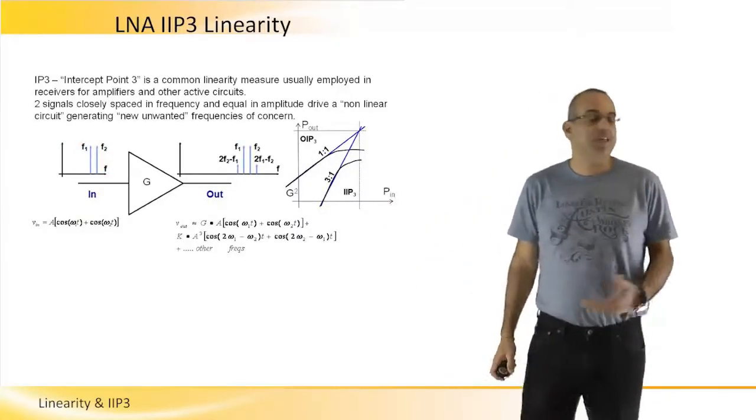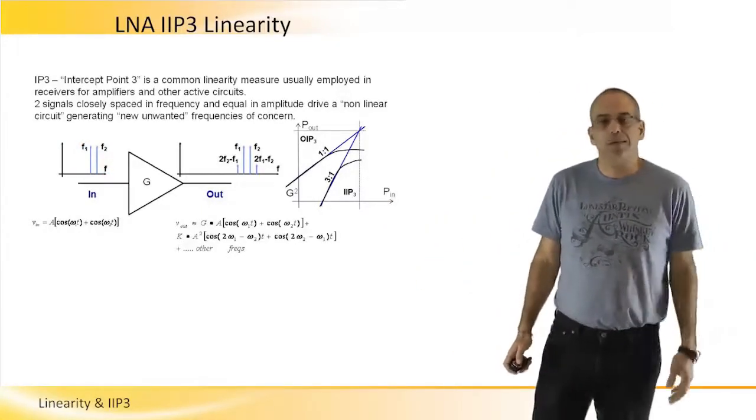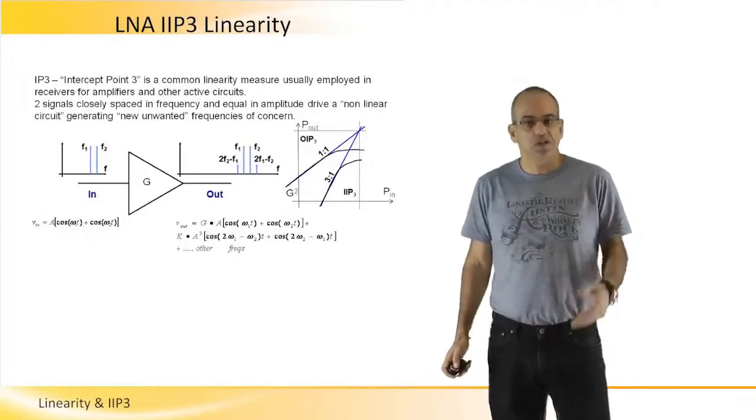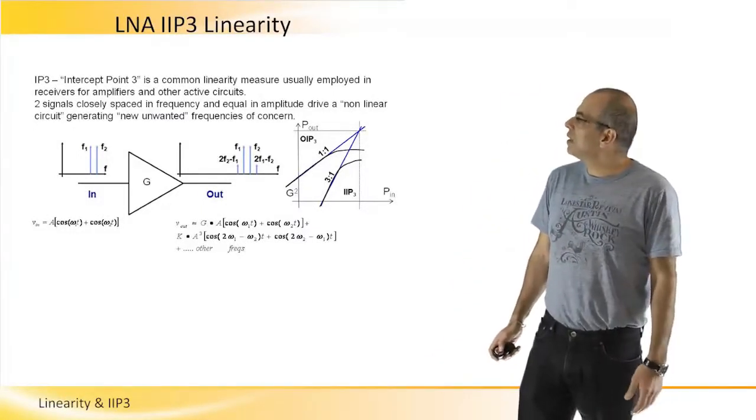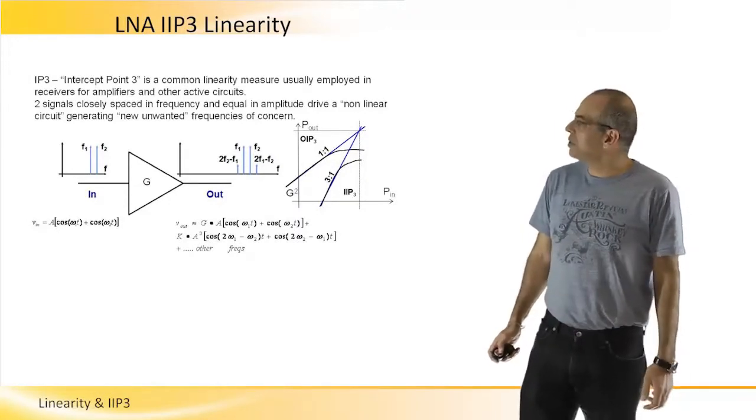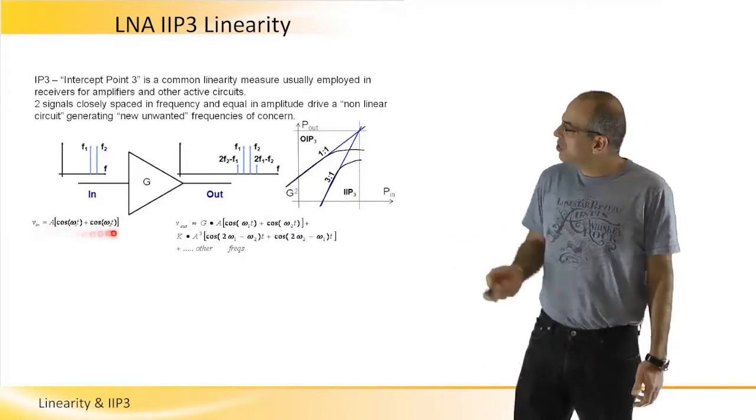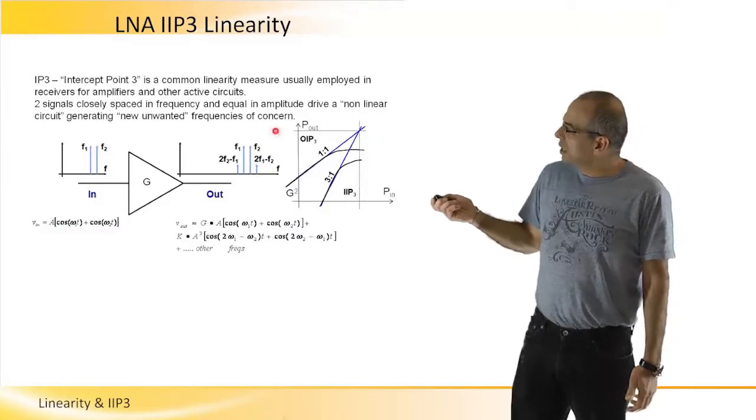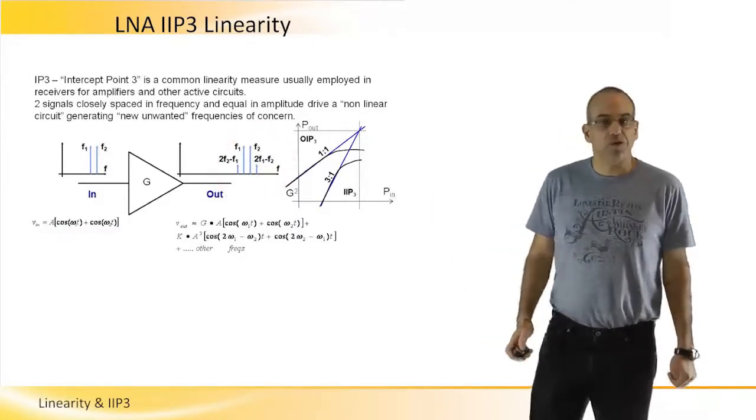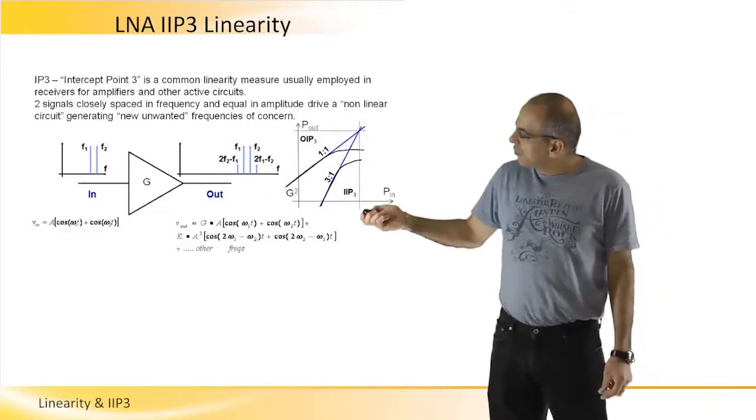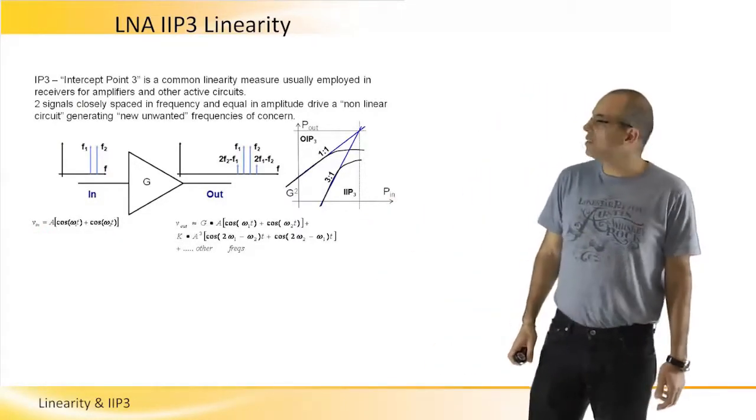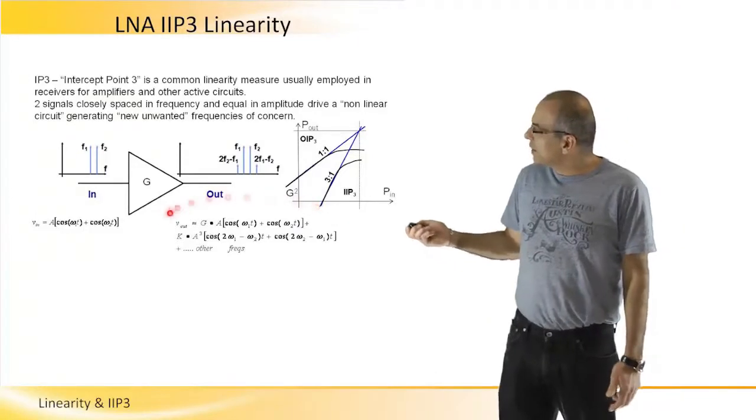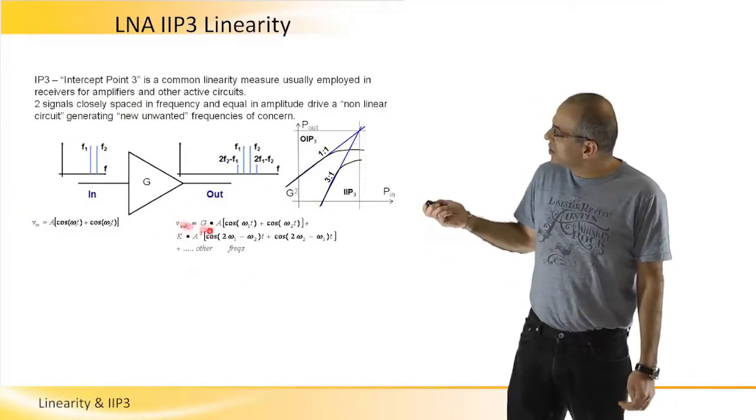into the LNA. It could be another device; it doesn't need to be just an LNA, but any other circuit can be characterized by IIP3. So we introduce two tones and measure the output spectrum. If we have two cosine signals at the input, at the output we will find these two cosines